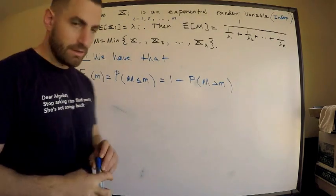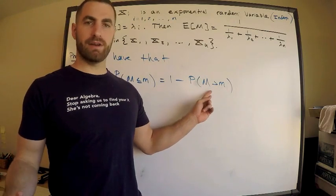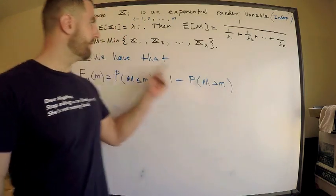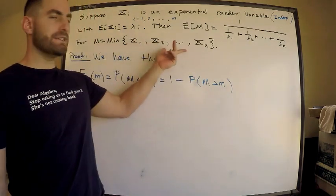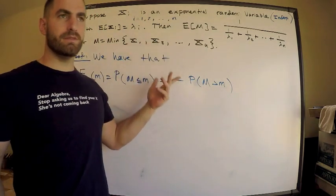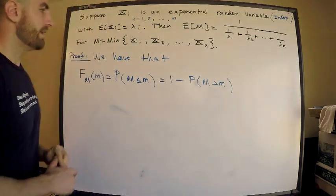This is something you can deal with regarding the minimum. Think about it for a second. If the minimum is greater than some m, that means all of my random variables are greater than m. I'm taking this list, saying the min of this list is greater than m. That means the smallest one is greater than m, so all of them have to be greater than m.